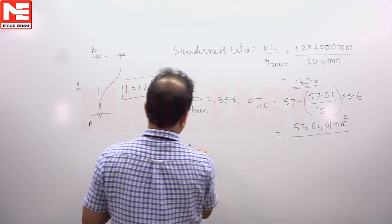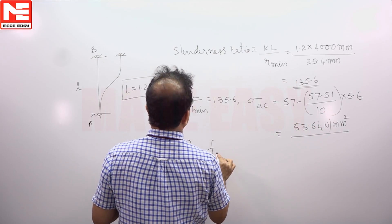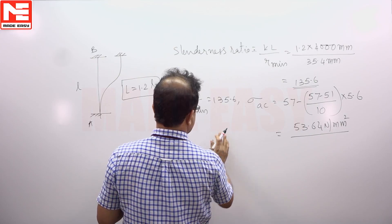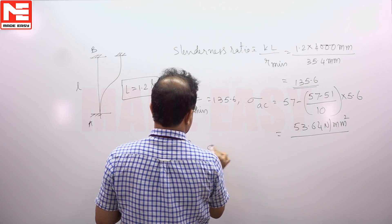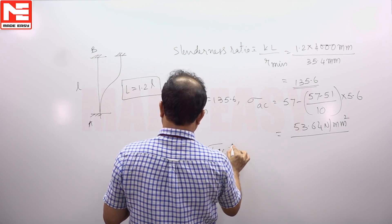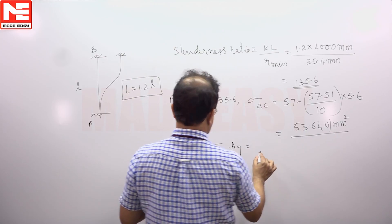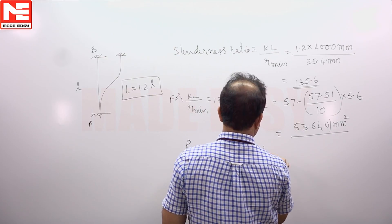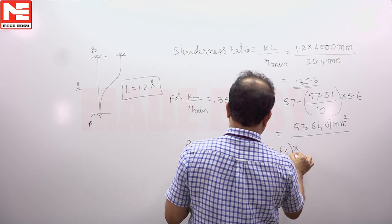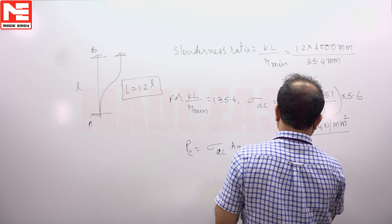So the load carrying capacity PC is equal to sigma AC into A gross. Sigma AC you are getting 53.64 and gross area is 34.48. So you will get 184.95 kilo Newton.